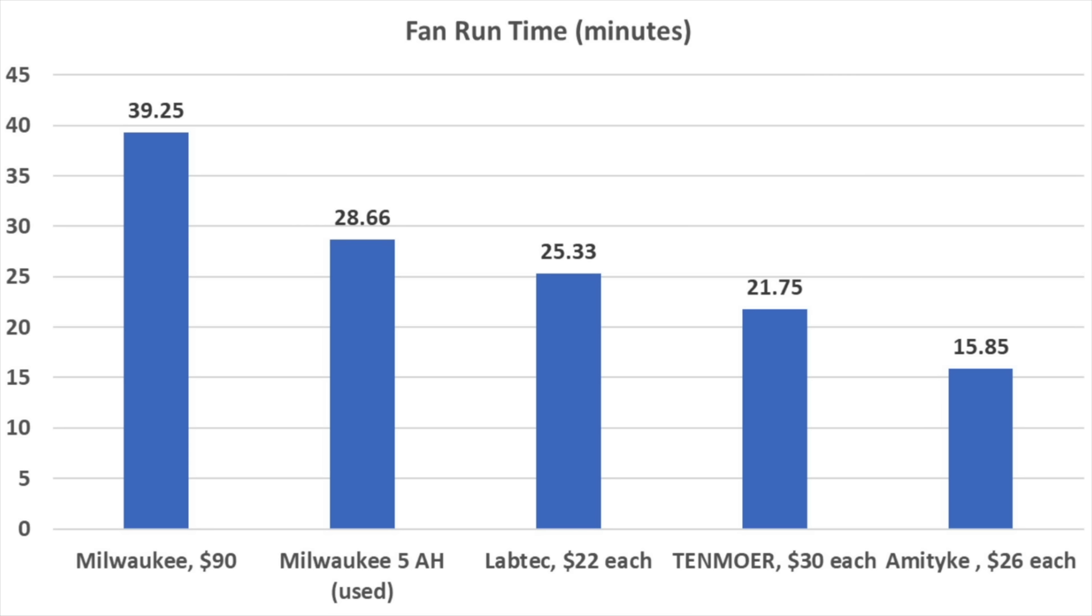The 6 amp hour Milwaukee outperformed all the knockoffs and the Emityke finished in last place among all the batteries and the knockoffs. But things were about to get a lot worse for the Emityke.